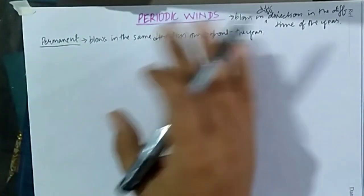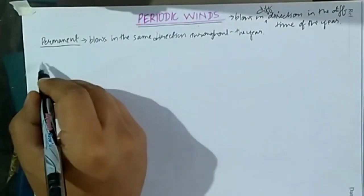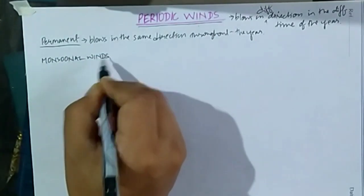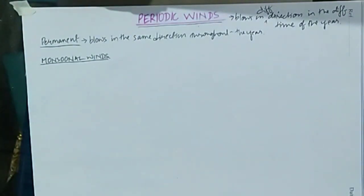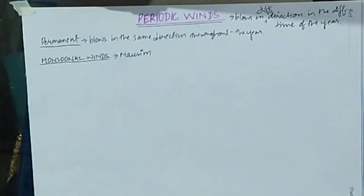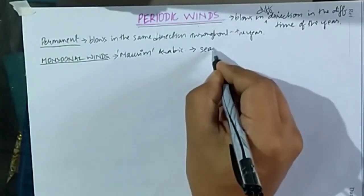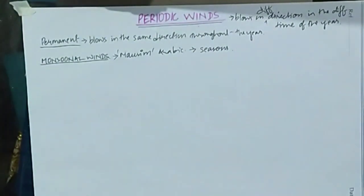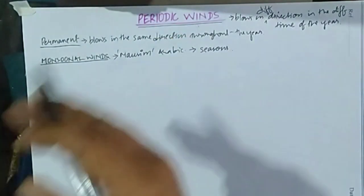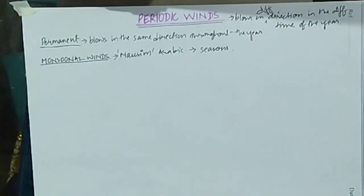That is the main difference between the permanent winds and the periodic winds. Now let us understand the periodic winds with the best example, which is the monsoonal winds. Monsoon is an Arabic term which means seasons. During the summers and winters, the monsoonal winds change direction, which is why it is termed periodic winds.